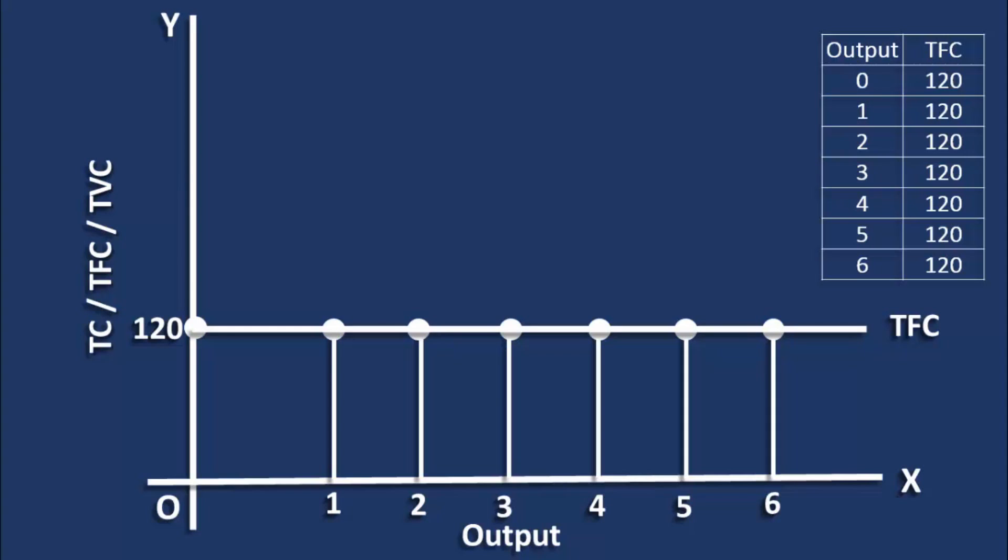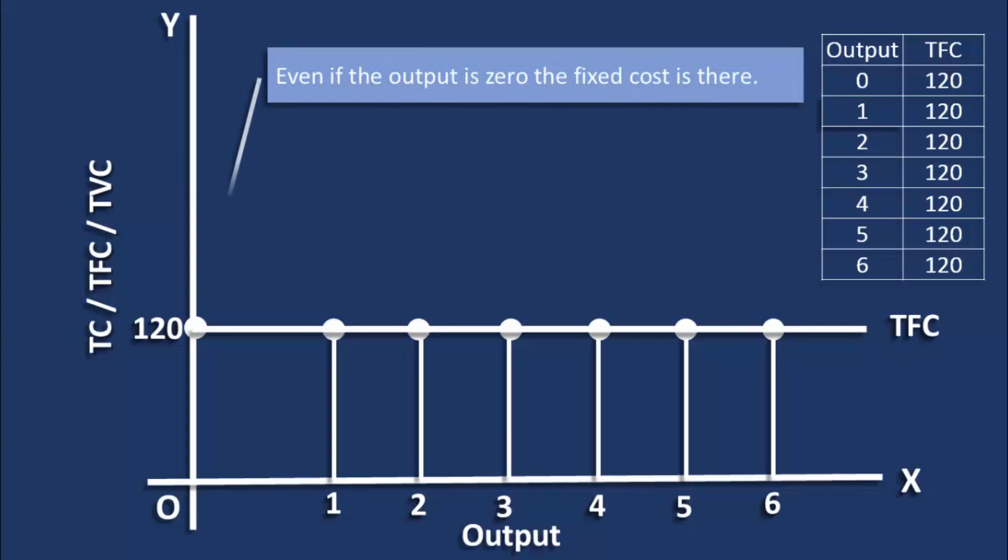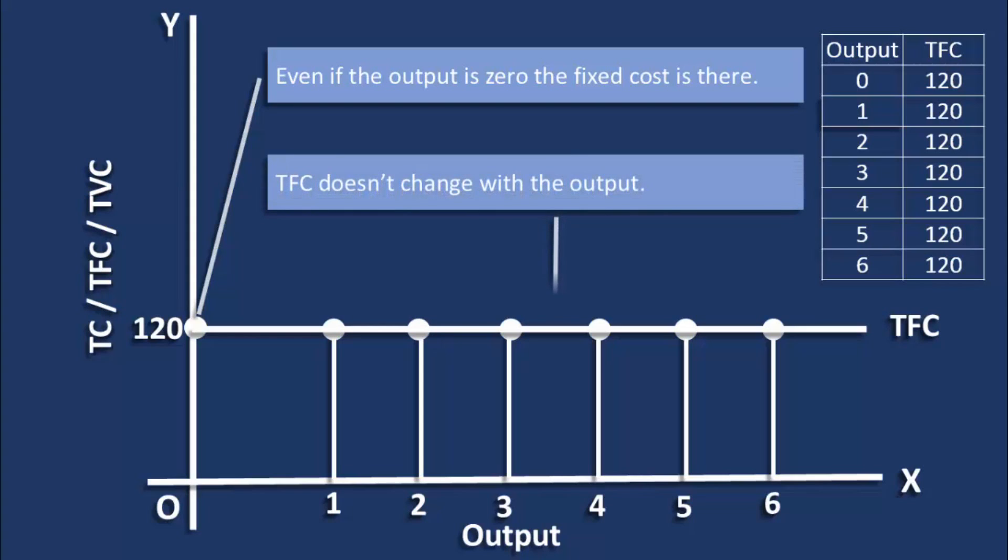Well, we are supposed to understand two things about TFC curve. They are: Even if the output is 0, the fixed cost is there. Total fixed cost doesn't change with the output.